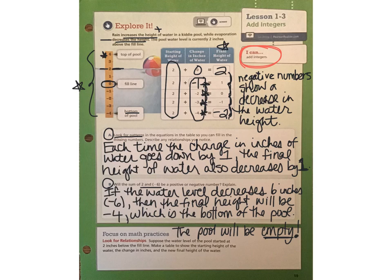Using the same ruler that you see in the problem, we can model this situation. The sum of two and negative six would essentially be what happens when we start at two inches above the fill line, and we drop or decrease by six inches. That would be your negative six. So if you start at two, and then you go down six inches, one, two, three, four, five, six, you end up at negative four. So you do get a negative number. And that actually is the bottom of the pool. So if I'm at the bottom of the pool, that means the pool is empty. I don't have any water in it anymore.